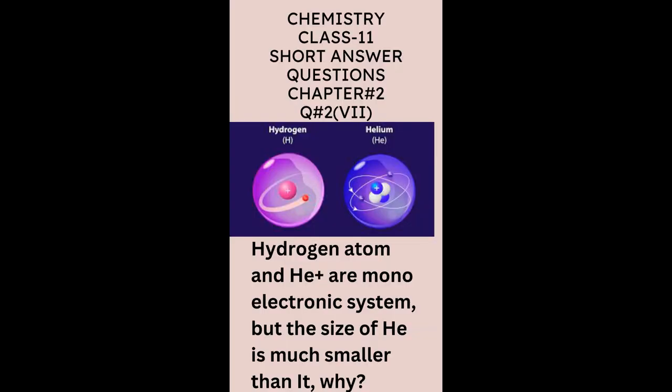Review question number 2 part 7. Hydrogen atom and He+ are monoelectronic systems, but the size of He is much smaller than it. Why?